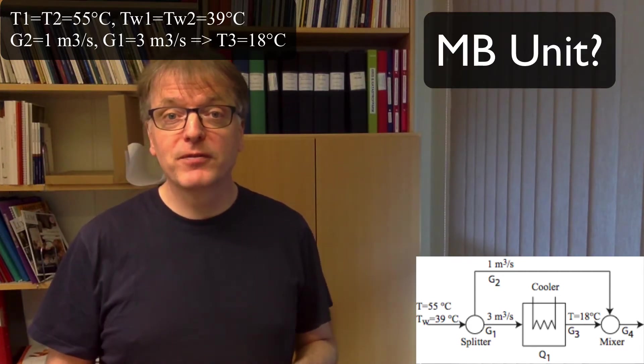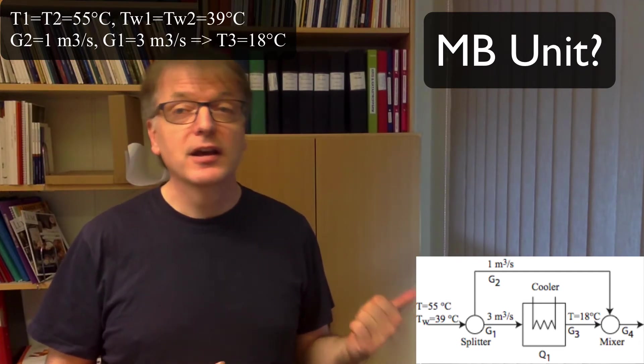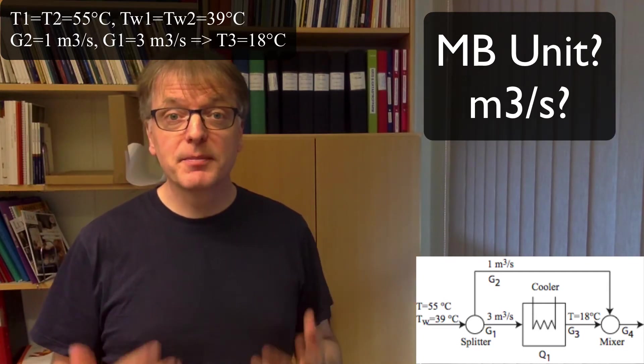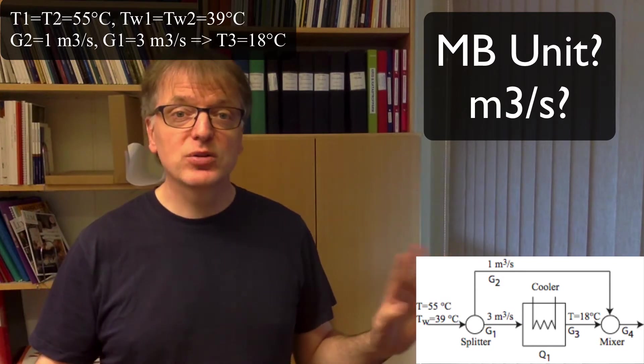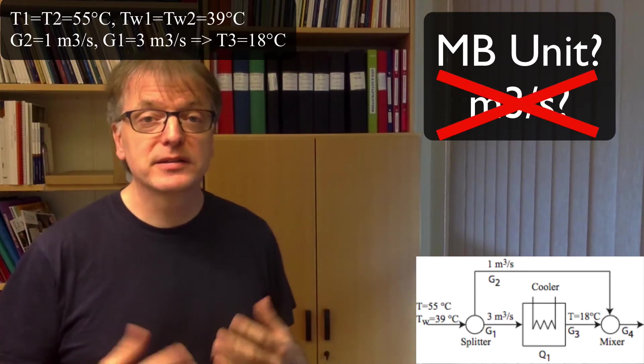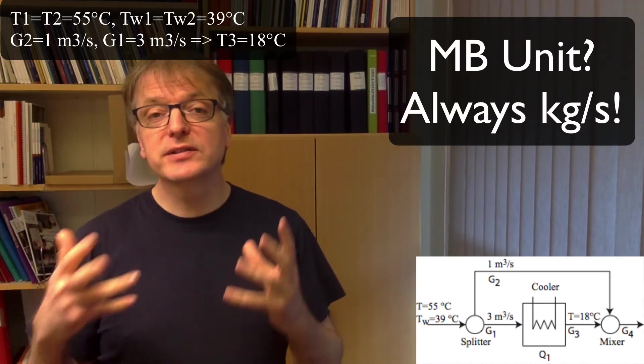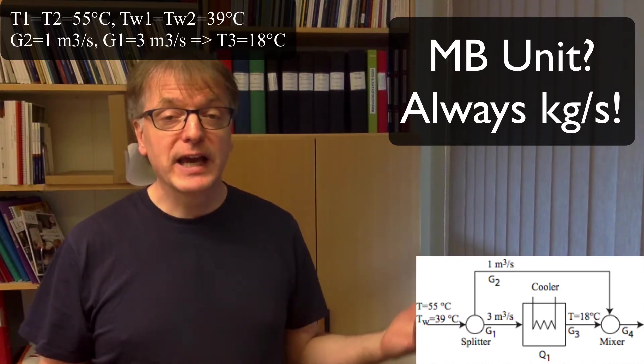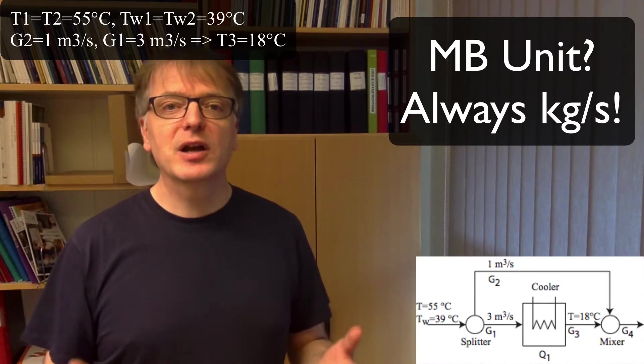If you think that G4 will be four cubic meters per second because you have G1 as three and G2 as one cubic meter per second, what you did then was making a mass balance in cubic meters per second. And that's not OK. You will get large reductions on my exams if you try to do something like that. So, as soon as I give you a volumetric flux of a gas, you must translate that into a mass flux, kilograms per second.